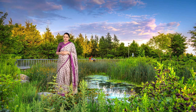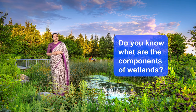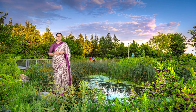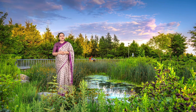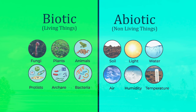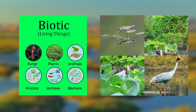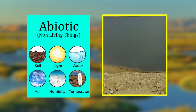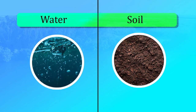Let me ask you a question. Do you know what are the components of wetlands? Let us try to understand that. Just like any ecosystem, the identity of wetlands is in the interaction of its biotic and abiotic components. The biotic components include aquatic flora and fauna, whereas the abiotic components include water and soil.